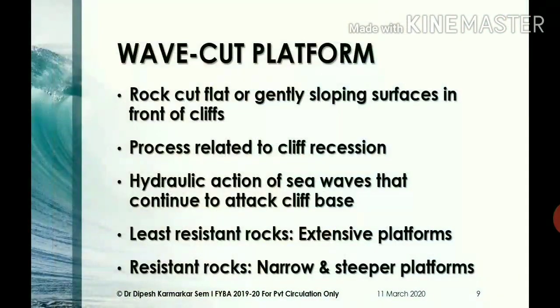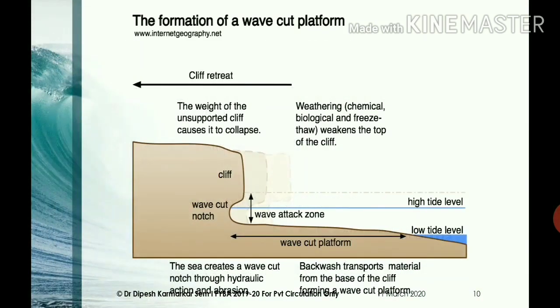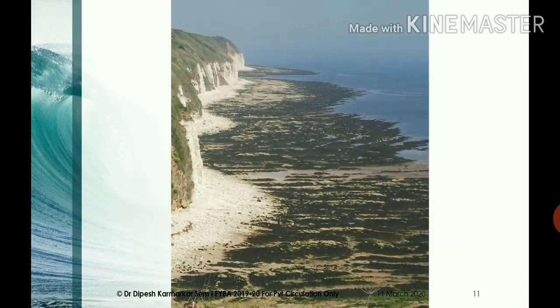Rock-cut flat surfaces in front of cliffs are called wavecut platforms. The origin and development of a wavecut platform is related to cliff recession. As you can see in this diagram, sea cliffs and wavecut platforms are formed simultaneously. Shore platforms are formed where cliff recession is active, due to hydraulic action of sea waves that continue to attack the base of the cliff. Extensive platforms develop where rocks are least resistant to wave erosion, while narrow and steeper platforms develop over resistant rocks.